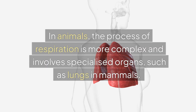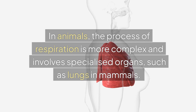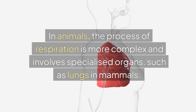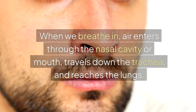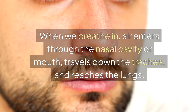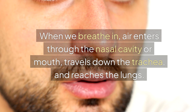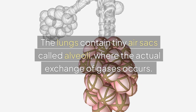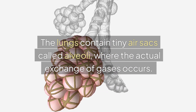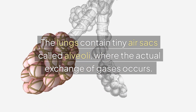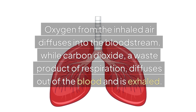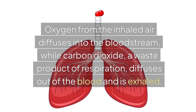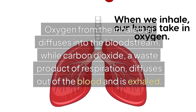In animals, the process of respiration is more complex and involves specialized organs, such as lungs in mammals. When we breathe in, air enters through the nasal cavity or mouth, travels down the trachea, and reaches the lungs. The lungs contain tiny air sacs called alveoli, where the actual exchange of gases occurs. Oxygen from the inhaled air diffuses into the bloodstream, while carbon dioxide, a waste product of respiration, diffuses out of the blood and is exhaled.